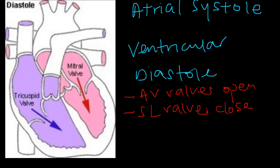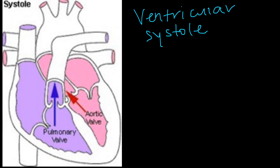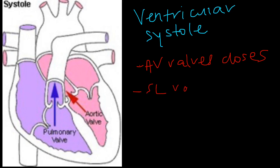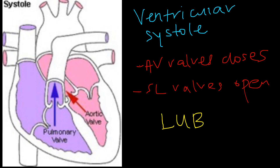The closing of the semilunar valves results in the "dub" sound. When the ventricles contract, blood is pushed out through the semilunar valves, and the atrioventricular valves snap shut — preventing backflow of blood into the atrium — producing the "lup" sound. So the atrioventricular valves closing causes the lup, and the semilunar valves closing causes the dub. The heartbeat goes lup-dub, lup-dub.